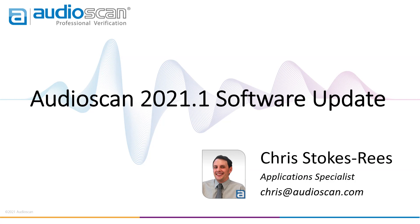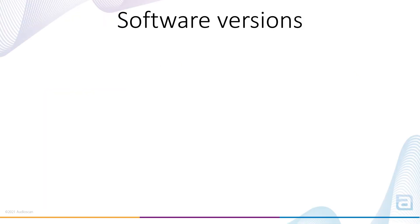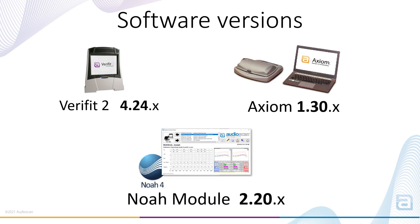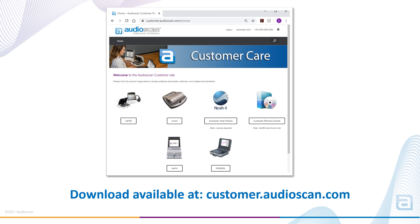Today we're going to quickly cover a few new features we've added to the AudioScan 2021.1 software update for Verifit 2, Axiom, and the AudioScan NOAA module. Software for Verifit 2 is now at version 4.24, Axiom at 1.30, and the AudioScan NOAA module has been updated to 2.20. It's important to always update your NOAA module to retain compatibility with your equipment and the latest data standards. The no-charge software update is available for download on our customer site at customer.audioscan.com.